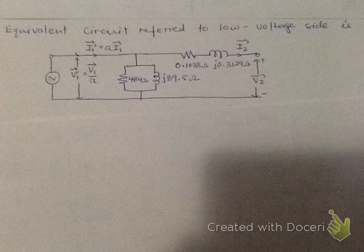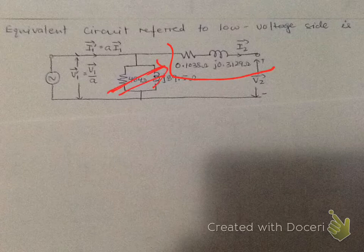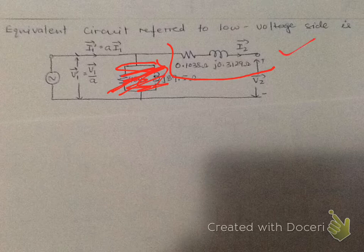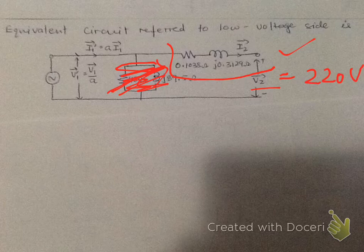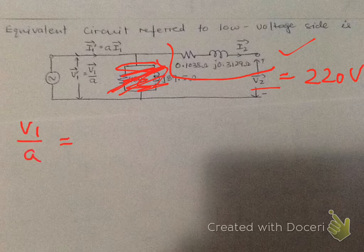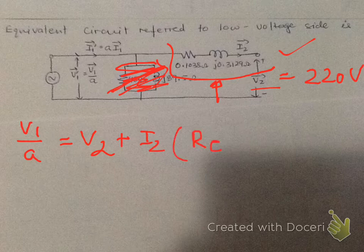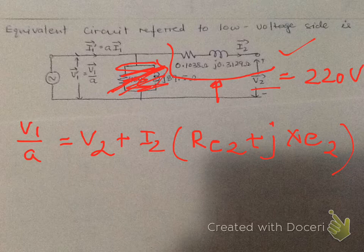For voltage regulation we only need the simplified equivalent circuit — the shunt branch can be ignored. V2 is on the low-voltage side, so the rated voltage is 220 volts. We calculate V1/a by adding the voltage drop across the series branch to V2, then find the difference and divide by V2. So V1/a = V2 + I2 × (RE2 + jXE2), where V2 = 220 volts.